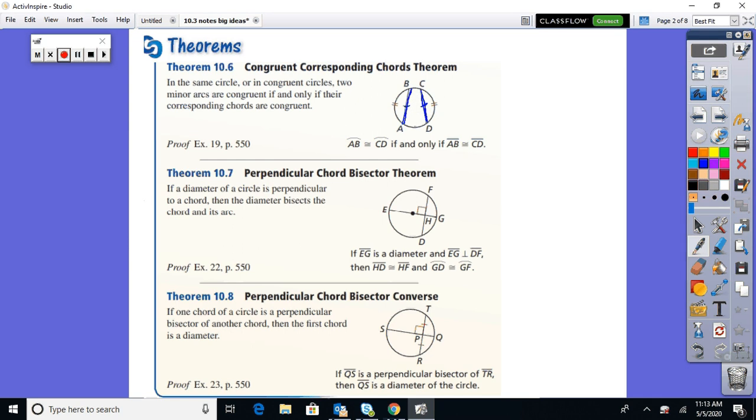So if I have a chord and another chord, if the arcs are congruent, then the chords are congruent, and vice versa. If the chords are congruent, then the arcs are congruent. So that should be pretty simple.